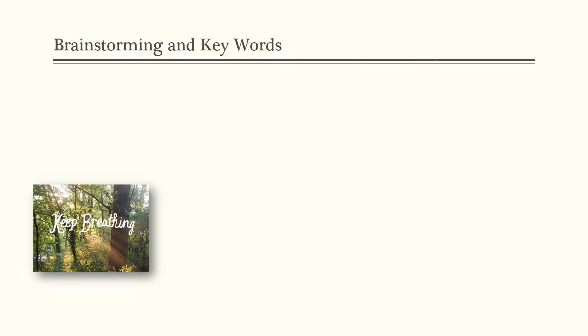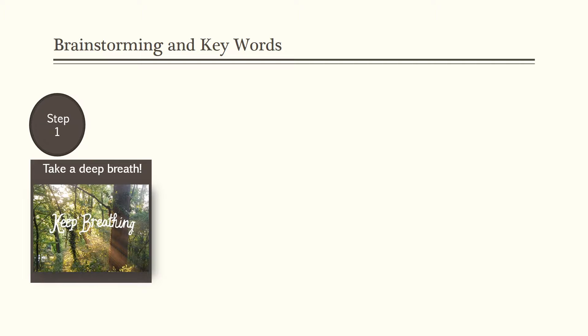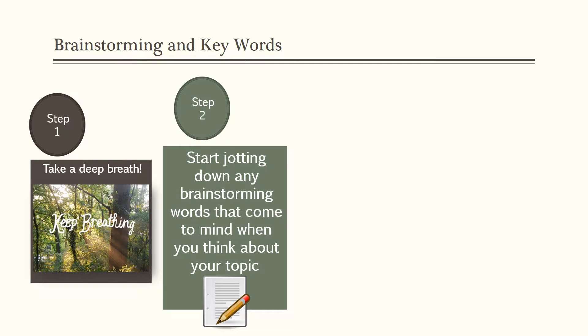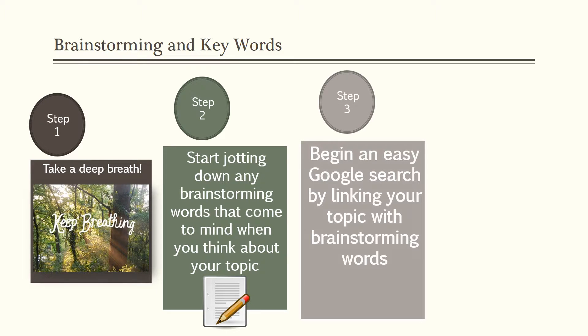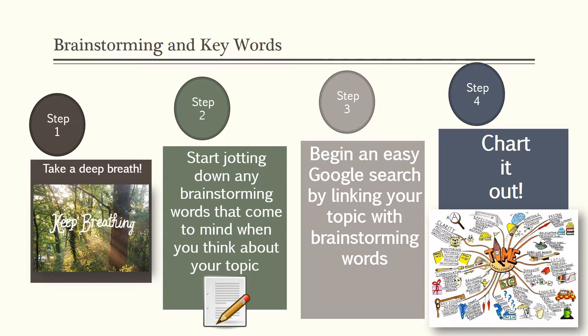When you have answers to those questions, it's time to start preparing how you will seek out specific information. First, take a deep breath. Next, think about how you can develop keywords and phrases to search with. This comes from a process called brainstorming, where you start throwing out connected words and ideas related to your topic. Once you have keywords or phrases identified, you can begin to search for articles, books, etc. We encourage you to use Google and the University Library databases. A step we highly recommend, especially helpful for visual learners, is a process called charting it out.